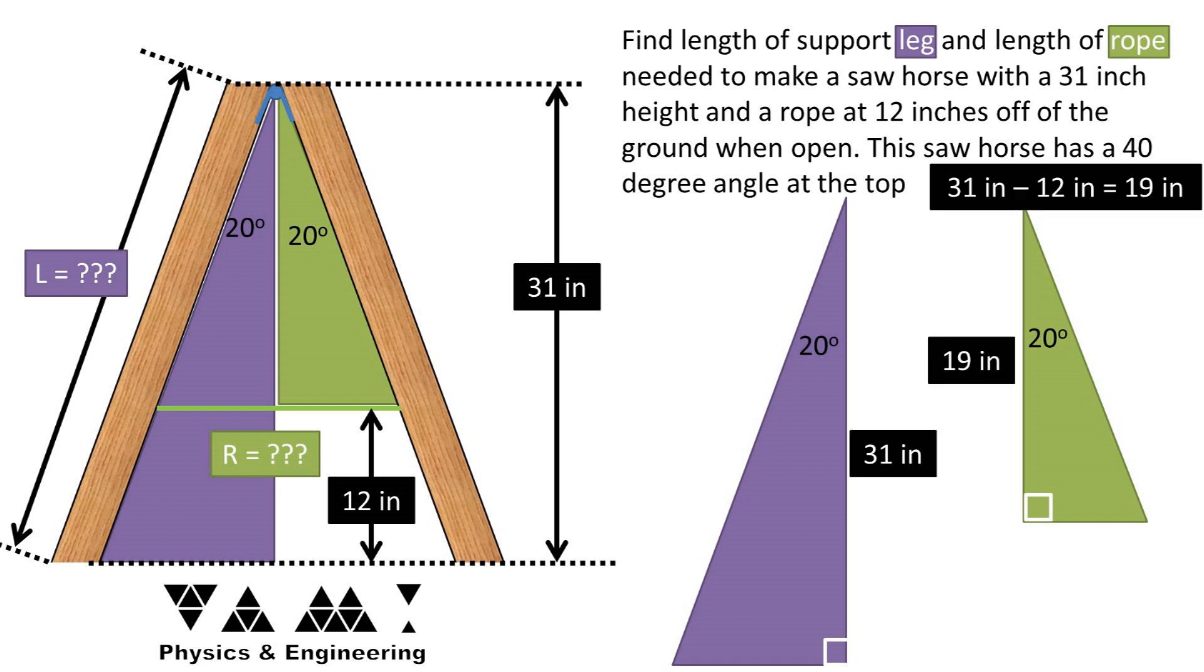The purple triangle's adjacent leg is 31 inches high off the ground, which is the height that we want the top of the sawhorse to be off the ground. We can take 31 inches high minus the 12 inches high off the ground the rope is, to get the adjacent leg of the green triangle of 19 inches.